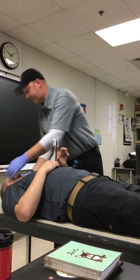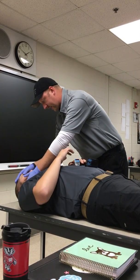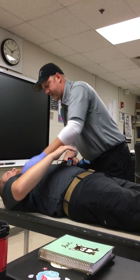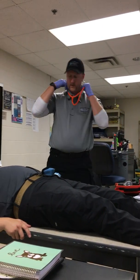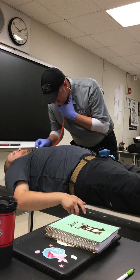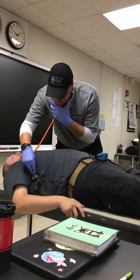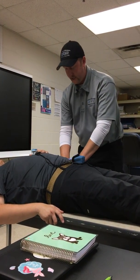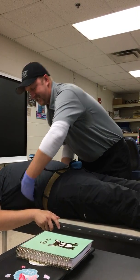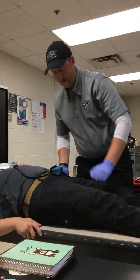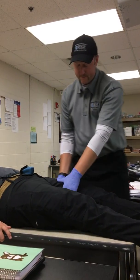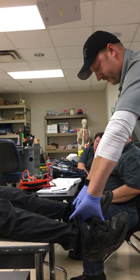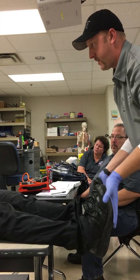Once we're in the ambulance, we're going to start our detailed physical exam. Starting at the head: looking for DCAP-BTLS, rechecking the eyes, mouth, and nose. The neck: checking for tracheal deviation and JVD. Palpate the chest in and down. We're also going to auscultate — listening for lung sounds at the apexes and the bases.